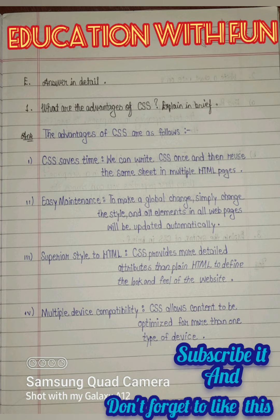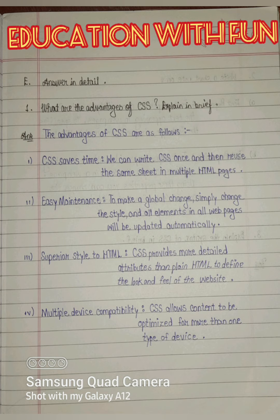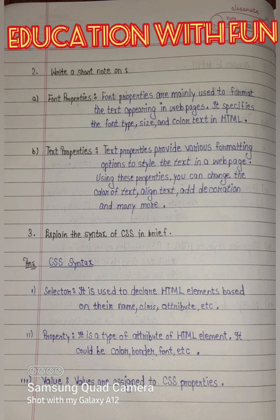Question two: Write a short note on font properties and text properties. Font properties are mainly used to format the text appearing in web pages. They specify the font type, size, and color of text in HTML. Text properties provide various formatting options to style the text in a webpage, such as changing the color, alignment, decoration, and many more.